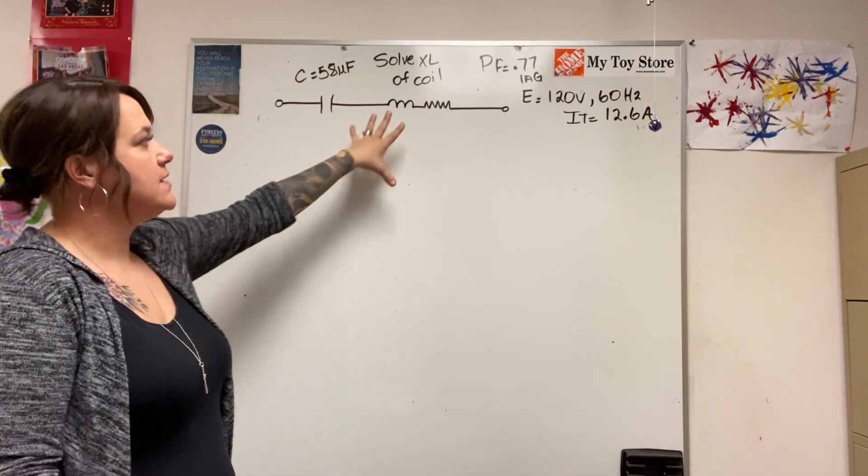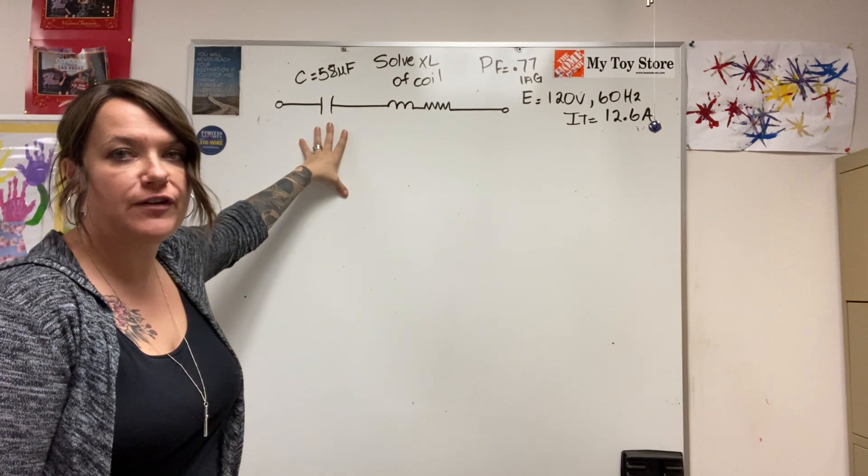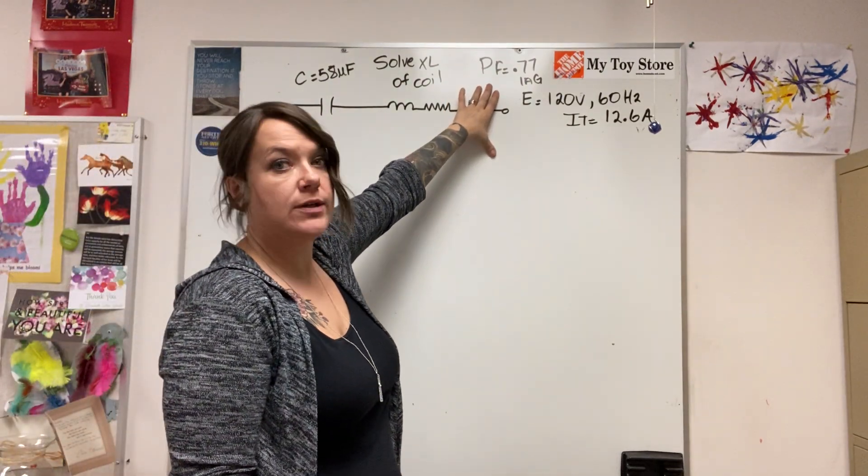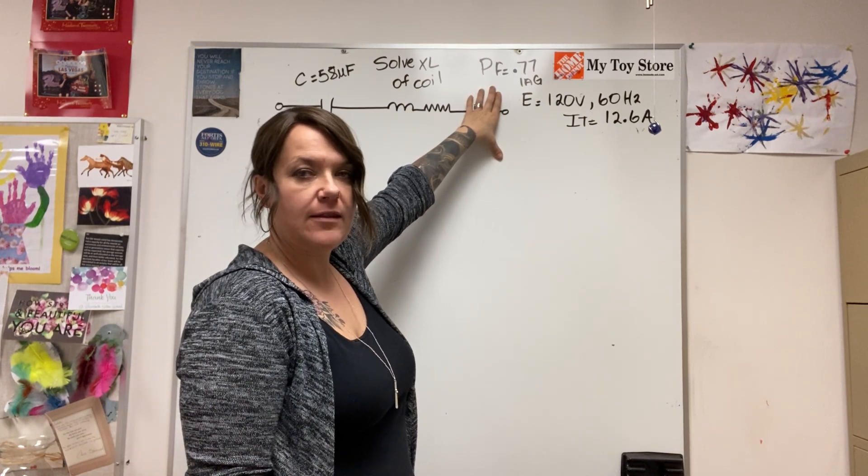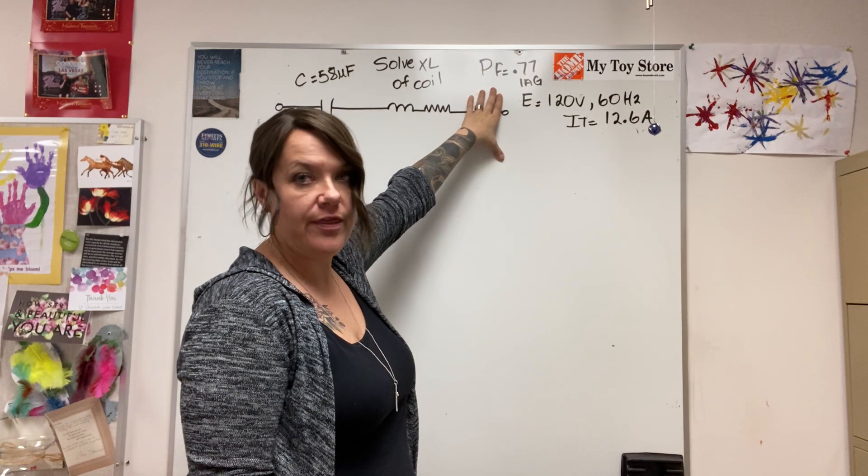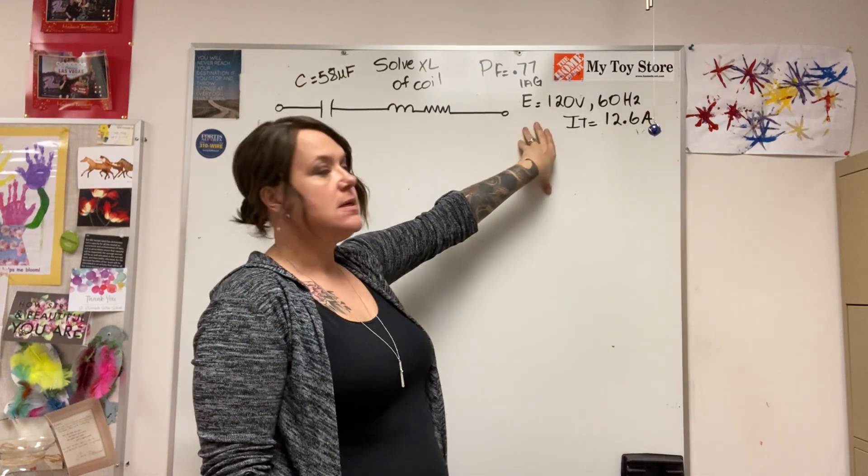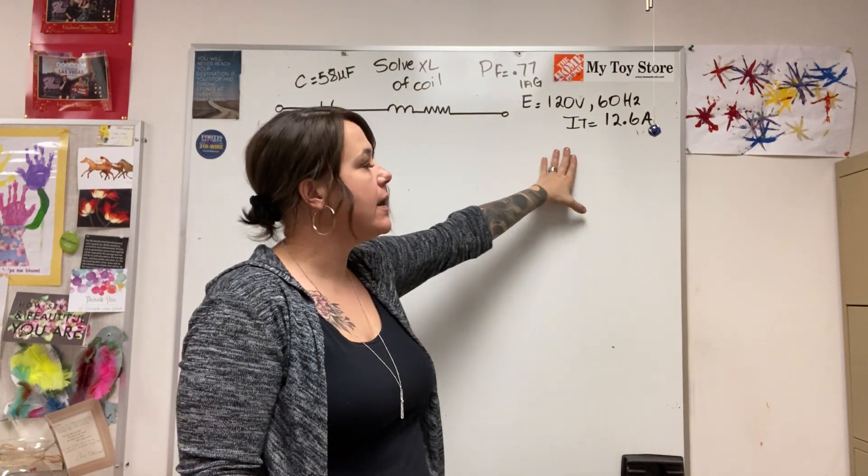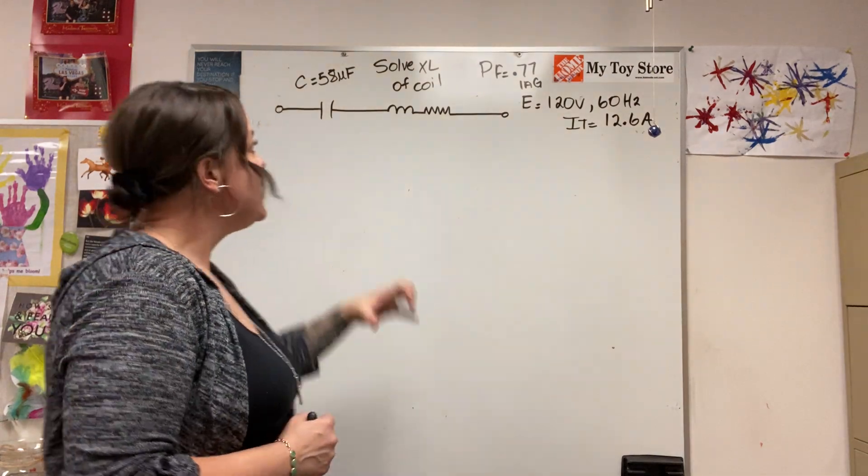You have a capacitor in series with a coil. The capacitor has a capacitance rating of 58 microfarads. Power factor of the circuit is 0.77 and it's lagging, so when I see that the overall power factor is lagging, that right away tells me that my XL is going to be greater than my XC. Supply voltage is 120 volts 60 hertz frequency, and my incoming line current is 12.6 amps. They want me to find the XL of the coil.